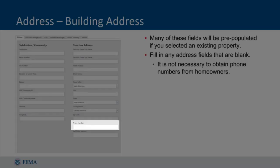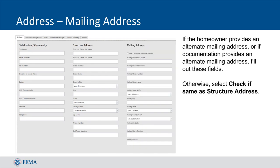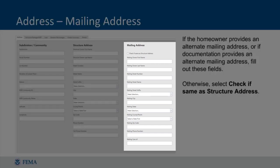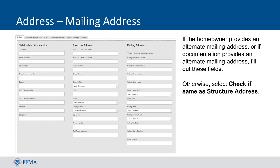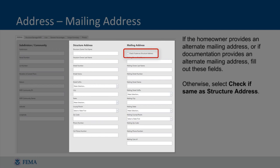Phone numbers are not needed unless the community requests this information be captured. If a homeowner provides a mailing address that differs from the building address, you can record this information in the Mailing Address column. If a separate mailing address is not provided, you should check the 'Check if same as building address' box, which will populate the Mailing Address column with the Structure Address information.